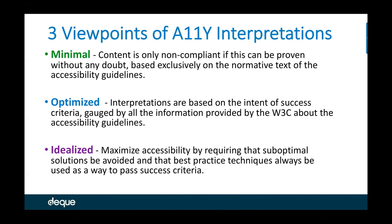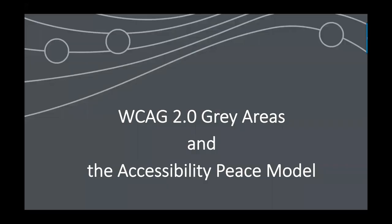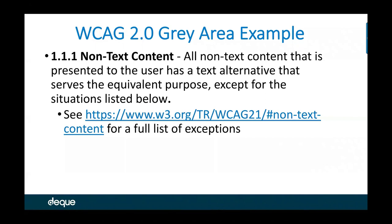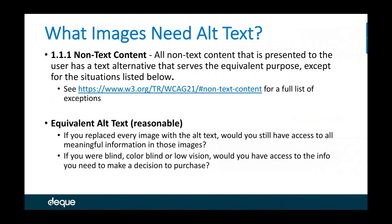In the minimal view, content is only failing if it can be proven without a doubt based on the normative text of WCAG 2.0. The optimized center line is when interpretations are based on the intent of the success criteria — the smart use of accessibility for good, creating good design, not just sliding by at the absolute minimum. And the idealized view is not even looking at what's currently possible, but going forward to create a better future and maximize new opportunities — like when Apple invented gestures to make touch screens accessible for visually impaired users.